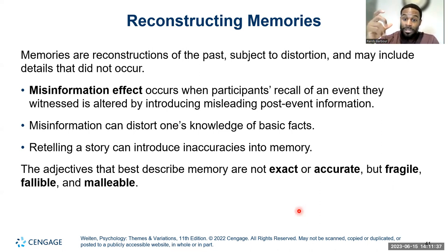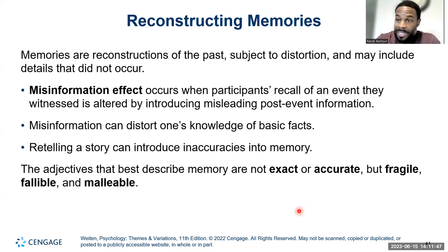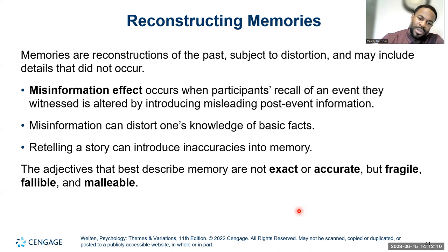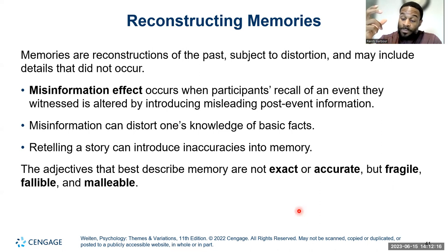This happens a lot with eyewitness testimonies. When people are in a traumatic, highly emotional event, investigators can input false information in the interrogation room, misleading the witness — sometimes causing people to admit to something they didn't do. Our memories can be distorted by basic facts given by someone we trust. Retelling a story over and over also introduces inaccuracies — memory is malleable and fragile, not bulletproof.